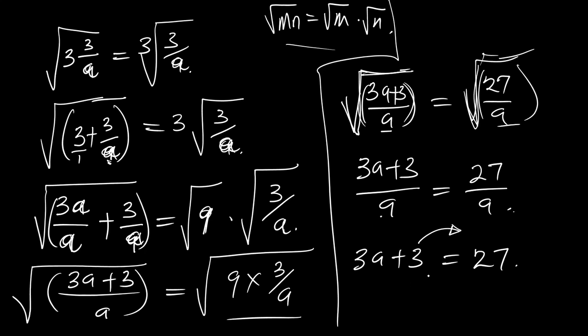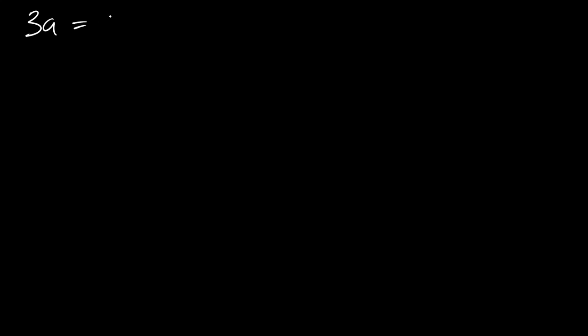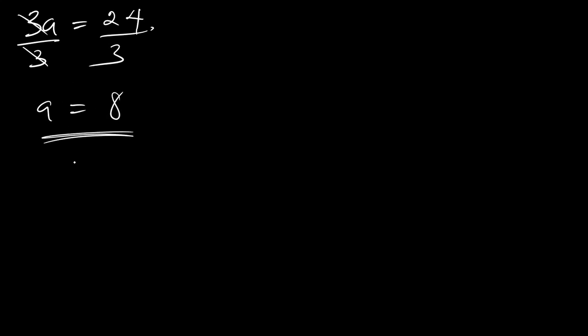Moving 3 to the other side, we have 3A equal to 27 minus 3, which gives us 24. So 3A equals 24. Dividing both sides by 3, we get A equals 8. This is the final answer.